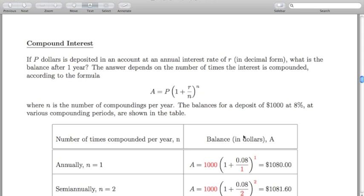Now let's look at a discussion on compound interest. Generally with interest, if you wanted to calculate or add interest onto something, you would take your initial amount plus your rate times your initial amount. If you factor out your initial amount, you're going to have your initial amount times 1 plus your rate. Let's take a look at compound interest. Say you have p dollars deposited into an account with an annual interest rate of r in decimal form. What's the balance after a year? This answer depends on the number of times the interest is compounded according to this formula.